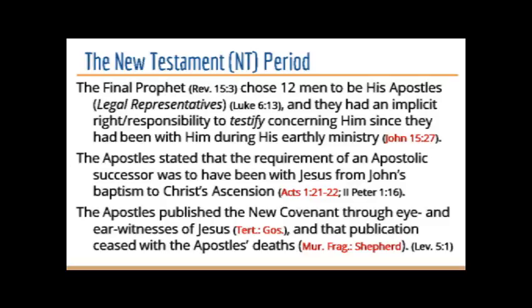Interestingly, this final prophet Jesus Christ came to fulfill the Old Testament through his life, death, and resurrection, but he himself didn't actually write anything. Instead, he chose twelve men to be his apostles. This is capital A Apostle. Just as the word 'prophet' can be used in lots of different ways in the Bible, the word 'apostle' can have a very general meaning — but when we're talking about those relevant for scripture, we're talking about those who act as legal representatives with a legal right and responsibility to testify concerning Christ.